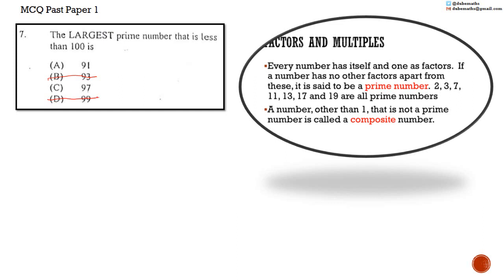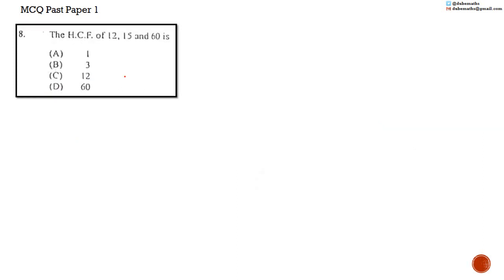But let us keep adding 7 to a known multiple of 7 to generate the rest. We know that 70 is a multiple of 7. If we keep adding 7, we will get 77, 84, 91, 98. Wait! 91. 91 is a multiple of 7 and it's not a prime number either. By elimination, we have determined that the answer is C, 97.